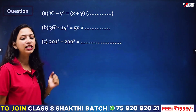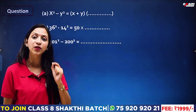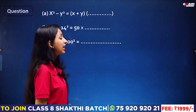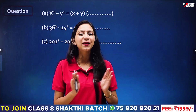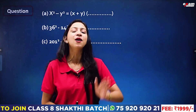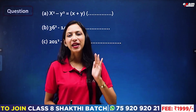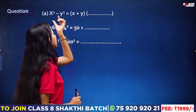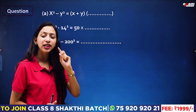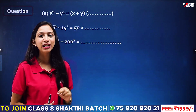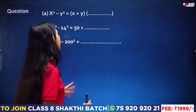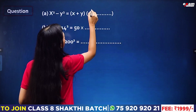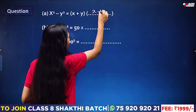x² - y² is equal to x plus y into x minus y. This is the difference of squares. x² - y² is equal to x plus y into x minus y.